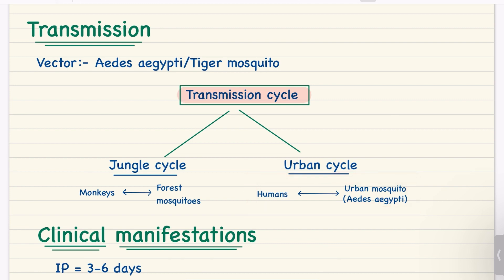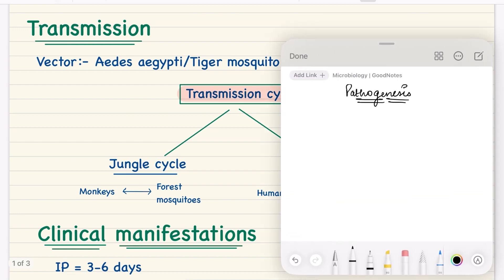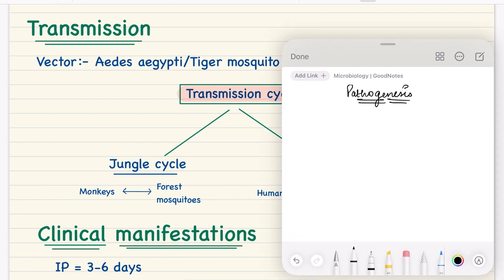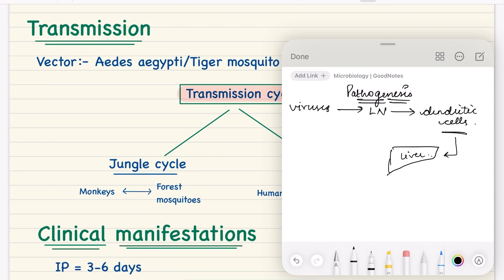In pathogenesis, after infection from the mosquito, the viruses replicate inside the lymph nodes. From the lymph nodes they specifically go to dendritic cells. From these dendritic cells the virus then enters the liver, where it infects hepatocytes via Kupffer cells. After infecting the hepatocytes, it leads to eosinophilic degradation.